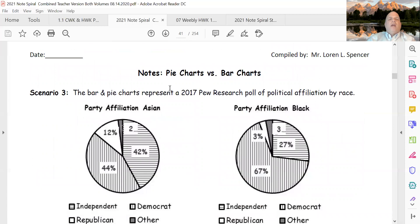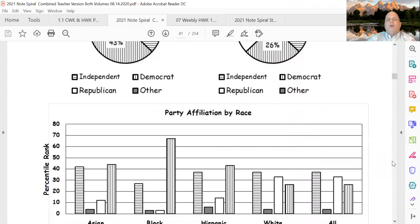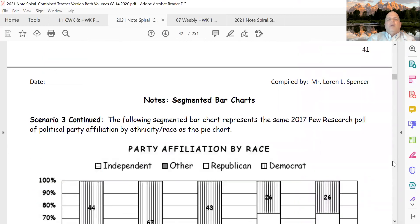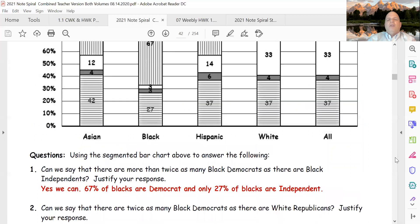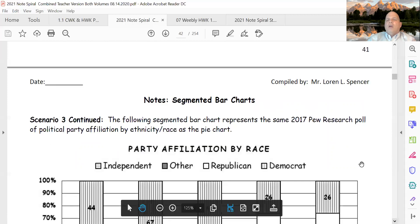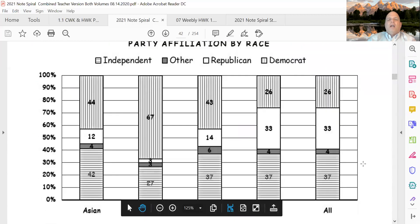On a previous page we showed a pie chart that had a Pew Research poll of party affiliation by race, and then we had a segmented bar chart that showed party affiliation by race. We said, you know what, I can look at that party affiliation by race on the segmented bar chart.